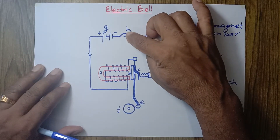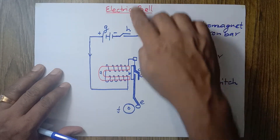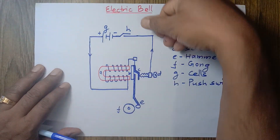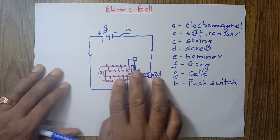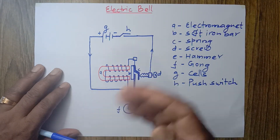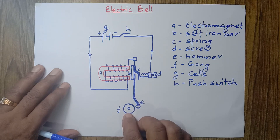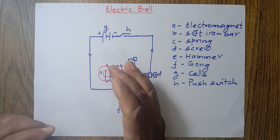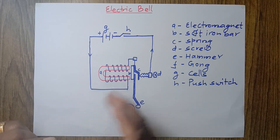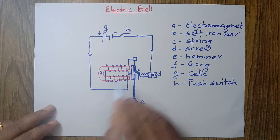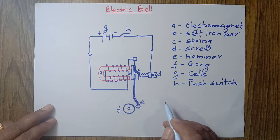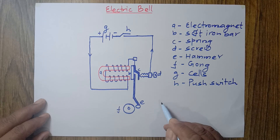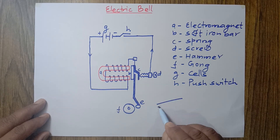When we stop pushing the switch, the circuit is disconnected at the push switch. When we push the switch, the connection and disconnection of the circuit occurs alternately, the hammer hits the gong alternately, and we hear the sound of the bell. This is how the electric bell works, and the electromagnet is the key factor in its working. That is why one of the important uses of an electromagnet is in making an electric bell.